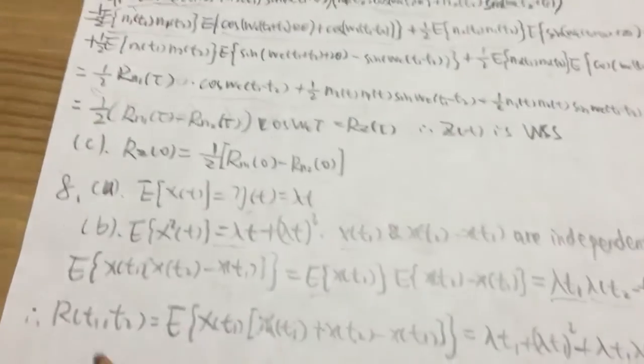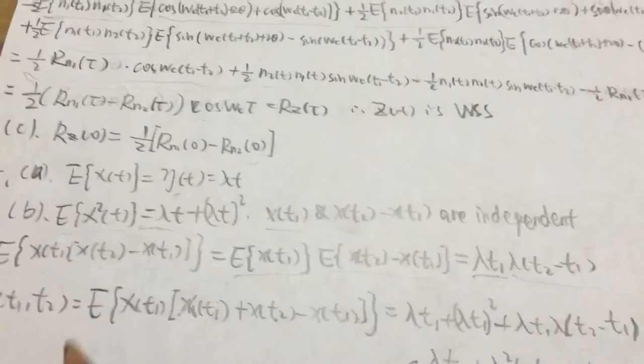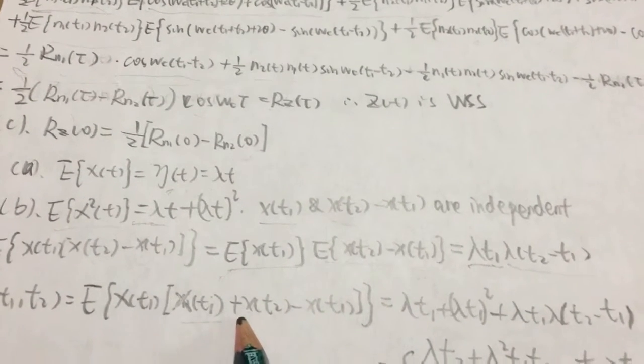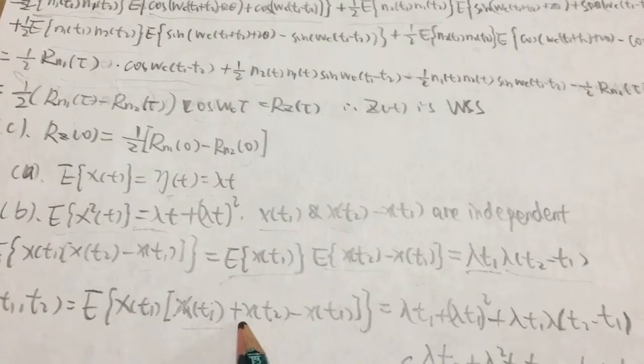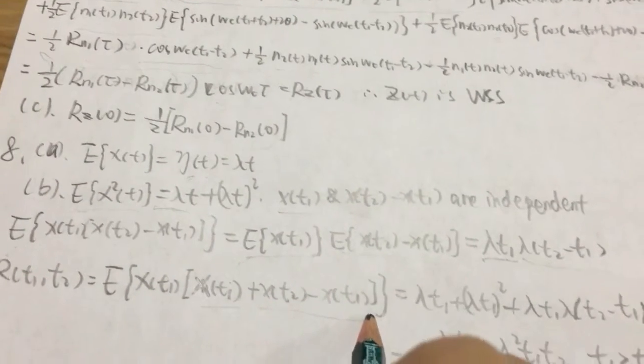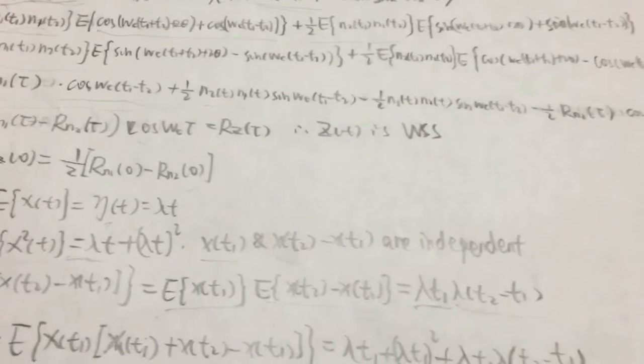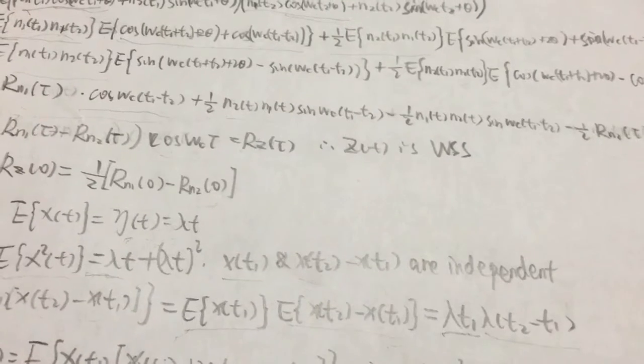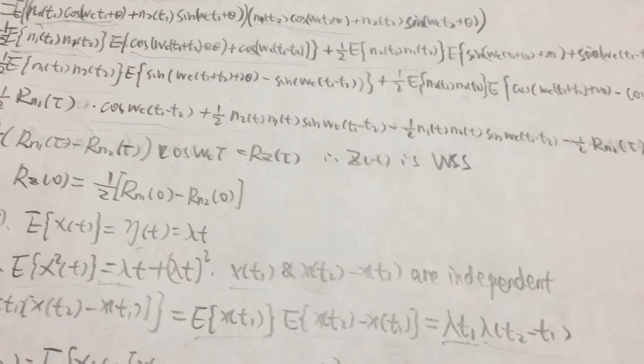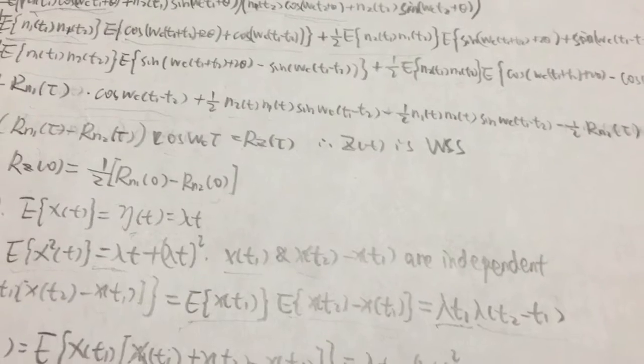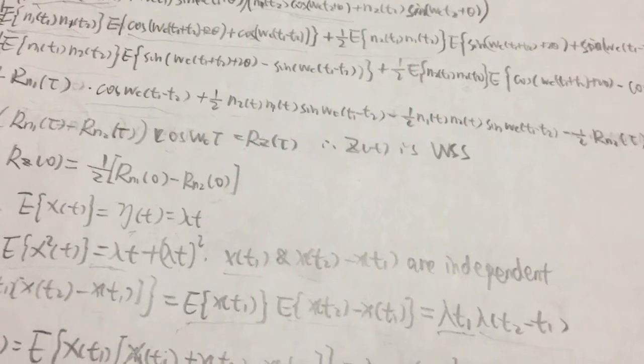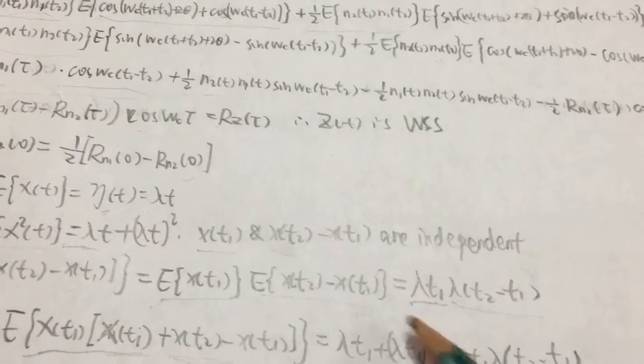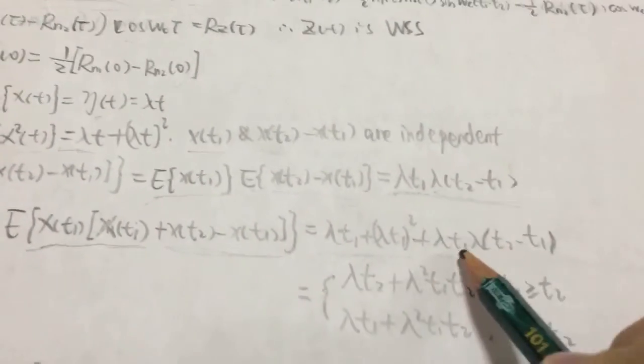t2) equals E[Xt1 times Xt2], which equals E[Xt1 times (Xt1 plus (Xt2 minus Xt1))]. So this equals lambda t1 plus lambda t1 squared, and this equals the things above.